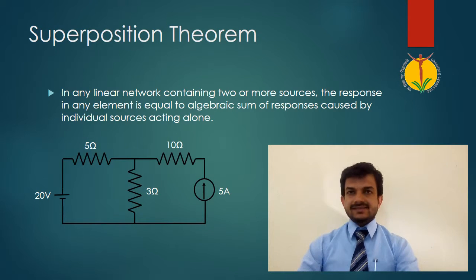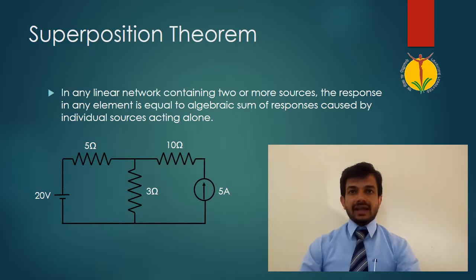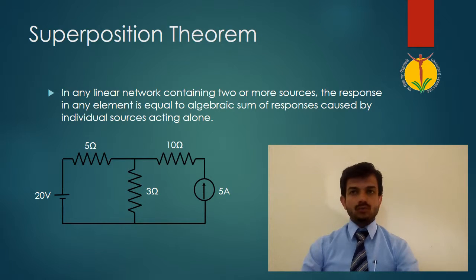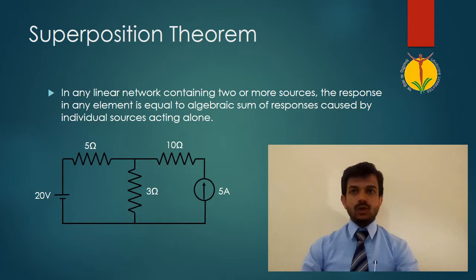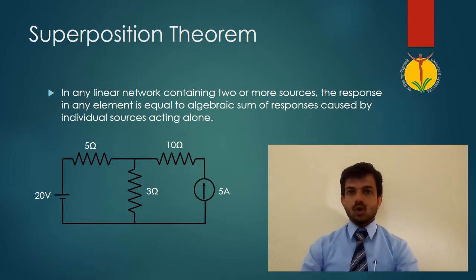Let us see the superposition theorem. It states that in any linear network containing two or more sources, the response in any element is equal to the algebraic sum of responses caused by the individual sources acting alone.